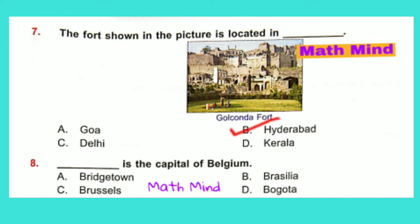Question No. 8: Dash is the capital of Belgium. Option C is correct: Brussels.